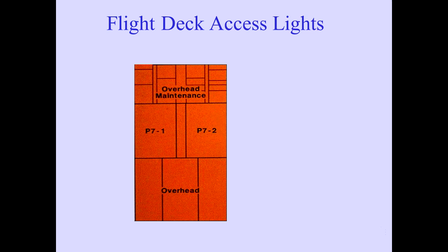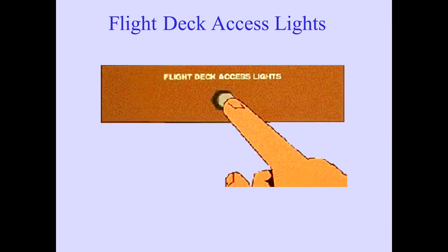Control for the flight deck access lights is located on the overhead maintenance panel. Pushing the flight deck access light switch illuminates an exit or entry path to or from the flight deck on a dark airplane. Two additional light switches control the same lights, one at the crew entrance door and one at the EE center lower hatch. The flight deck access lights are powered by the ground handling bus until normal AC power is established.